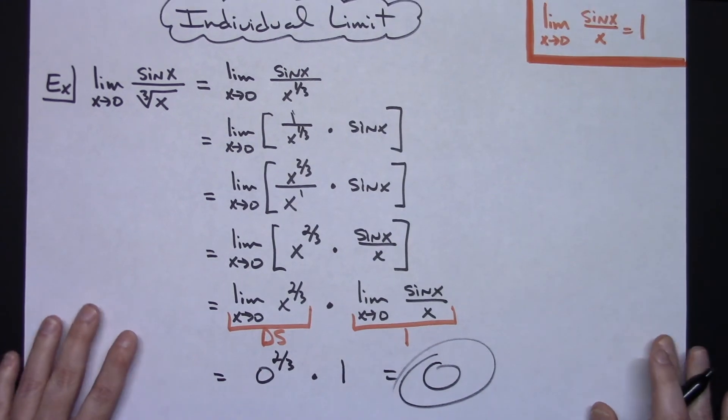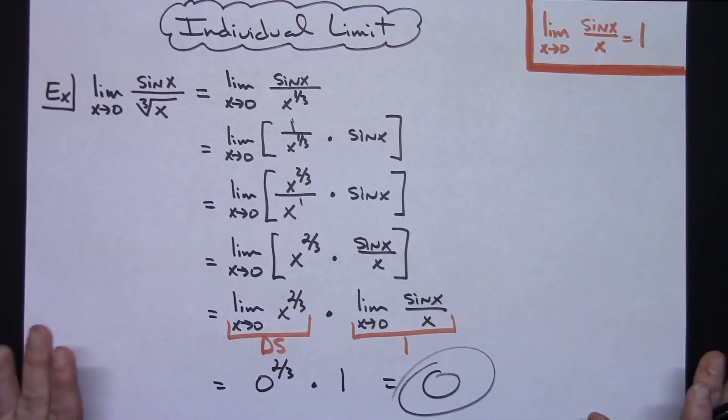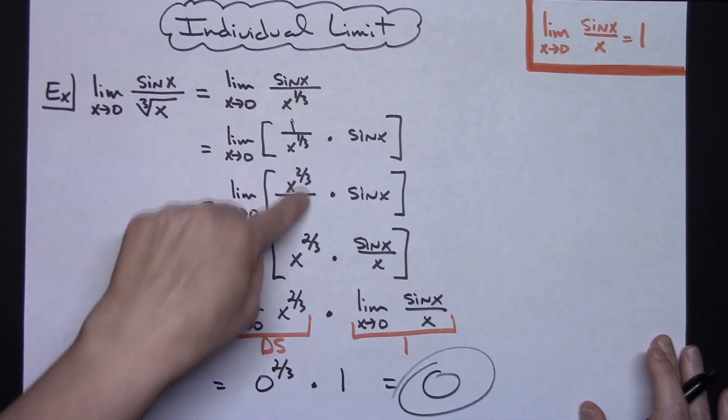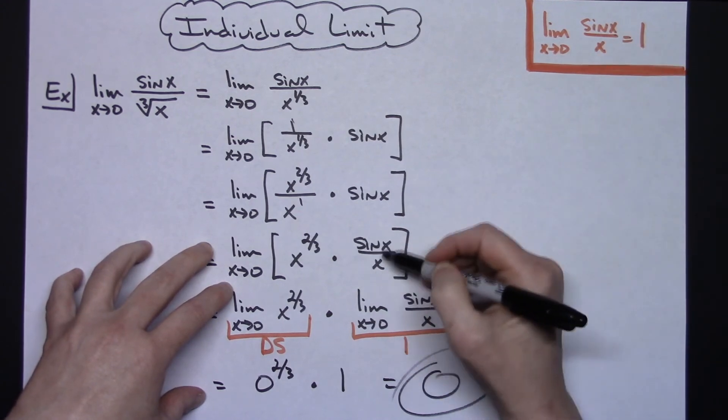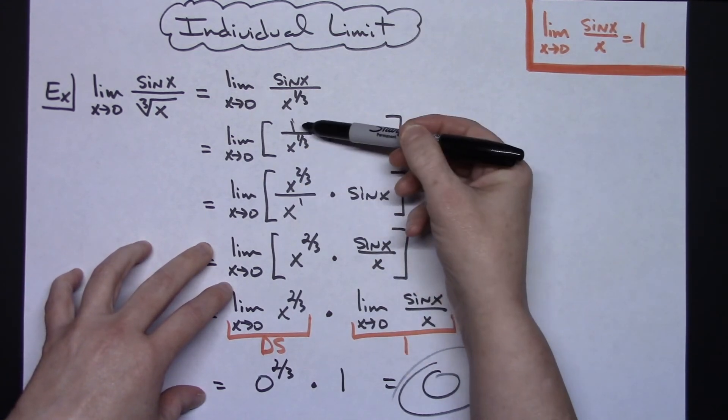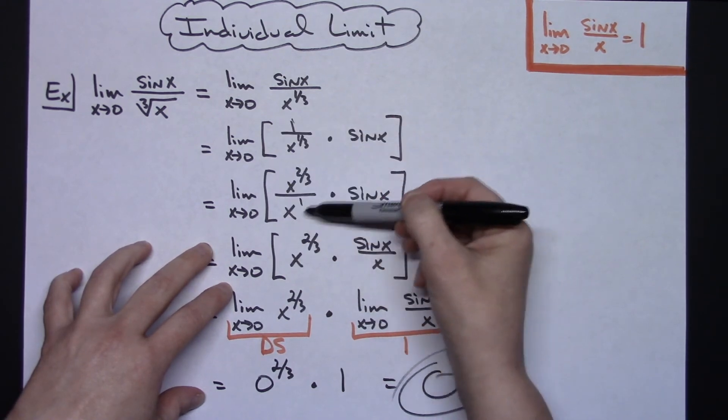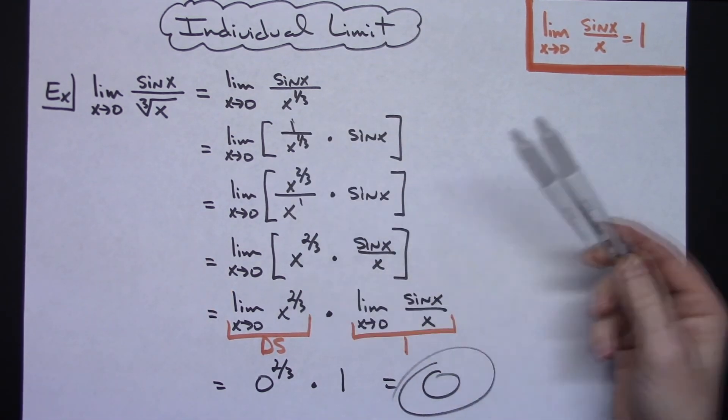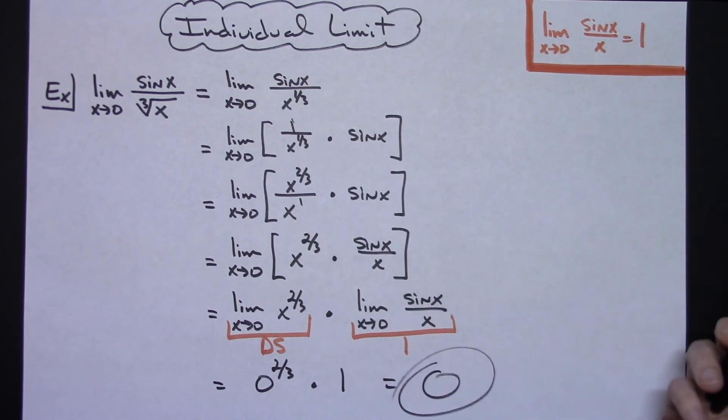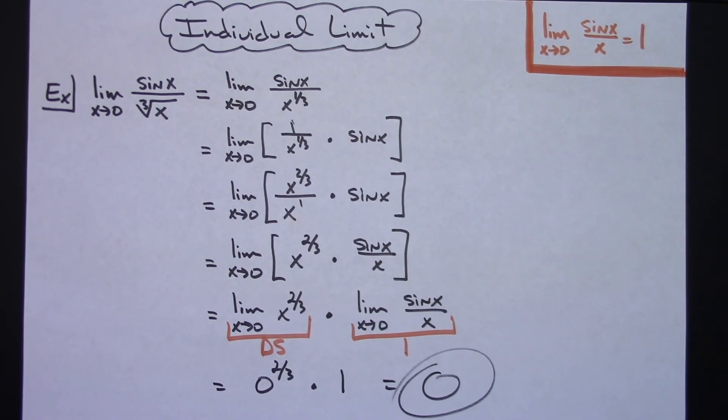It's straightforward after you manipulate it so sine x over x shows up. The hardest part is coming up with an equivalent fraction using laws of exponents to get that x in the bottom so you can move it over. Thanks for watching. If the videos are helping you, share with your friends and subscribe to the channel.